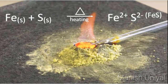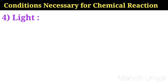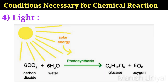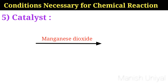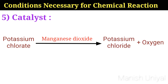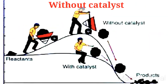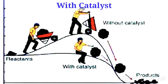The fourth necessary condition is light. Some reactions take place in the presence of light. For example, photosynthesis, in which carbon dioxide and water react in the presence of chlorophyll and light to produce glucose and oxygen. The fifth necessary condition is catalyst. Some reactions need a catalyst to speed up or slow down the reaction. For example, manganese dioxide acts as a catalyst for the decomposition of potassium chlorate into potassium chloride and oxygen at a lower temperature. A catalyst is a substance which changes the rate of chemical reaction without itself undergoing any chemical change. Different chemical substances are used as catalysts for different chemical reactions.